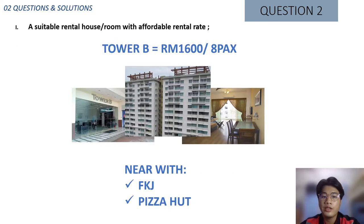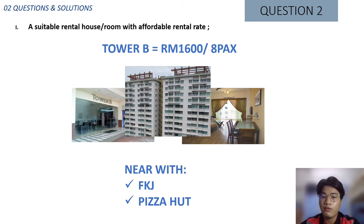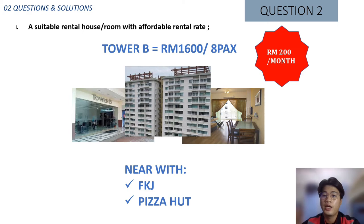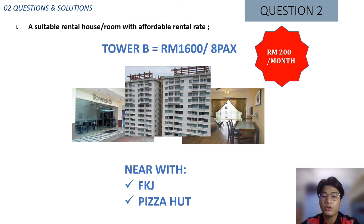For the rental house, we decided to place him at Tower B with an average rental of 1,600 ringgit per house, but since he shares with friends the cost comes to around 200 ringgit per month. Tower B is strategic because it is near the faculties FKJ and also near the Pizza Hut where he works.